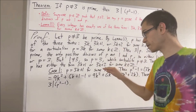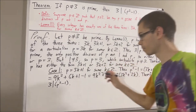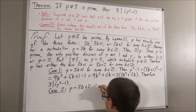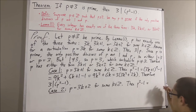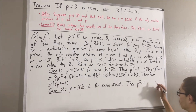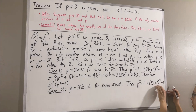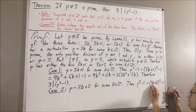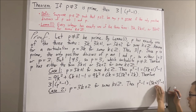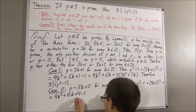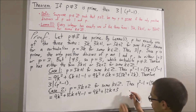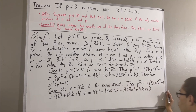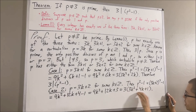Now let's move on to Case 2, where p has the form 3k plus 2 for some integer k. What's p squared minus 1 equal to? We can take p and substitute it for 3k plus 2. We know that 3k plus 2 squared is equal to 9k squared plus 12k plus 4. Then 4 minus 1 gives us 3, and we can factor out a 3. So we see that p squared minus 1 is equal to 3 times an integer, meaning 3 is a divisor of p squared minus 1.